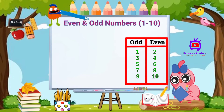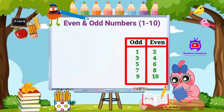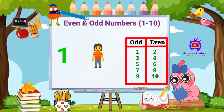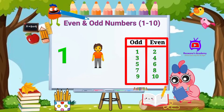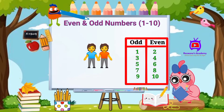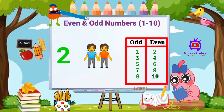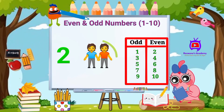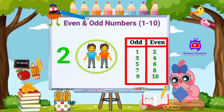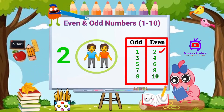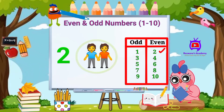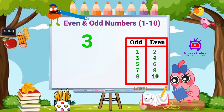Let's begin with one. This kid here is alone with no friends, so one is an odd number. Another kid joins him — now we have two kids here. They have formed a group of two with no one left alone, so two is an even number.